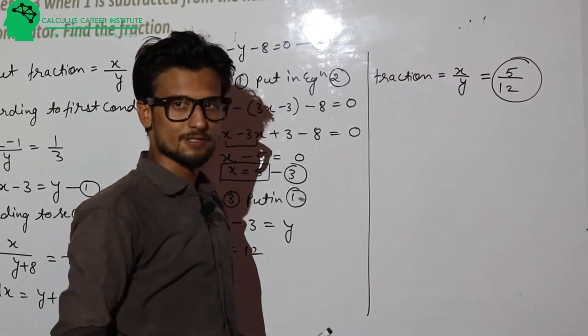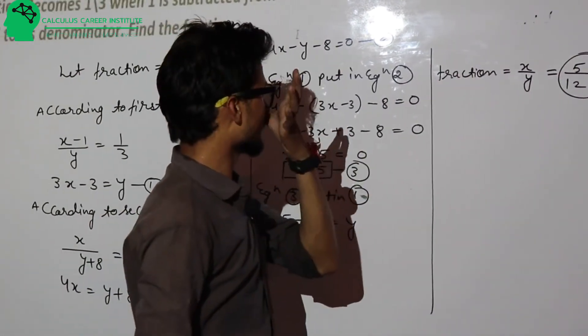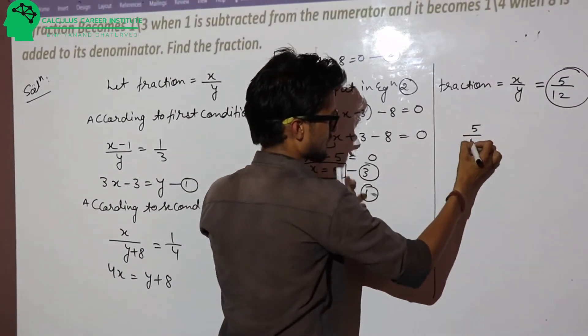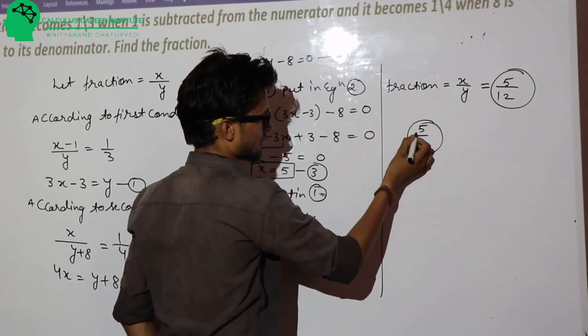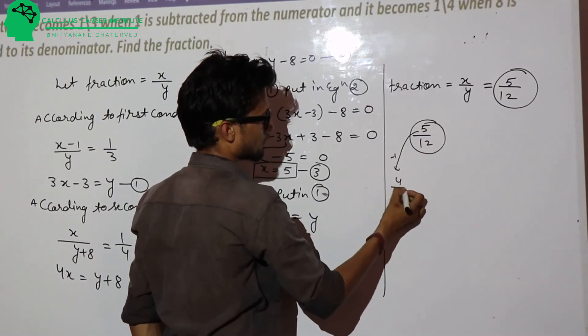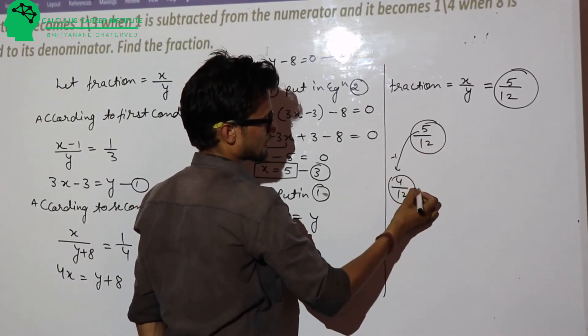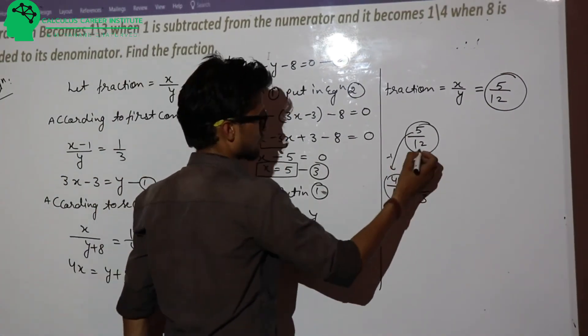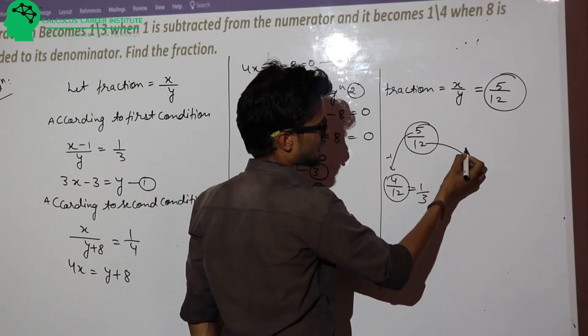Let's check the answer. We will get 1 subtracted. If you have a fraction with numerator equal to 5, you subtract 1, then you will get 4 upon 12. Then you will get 1 upon 3.